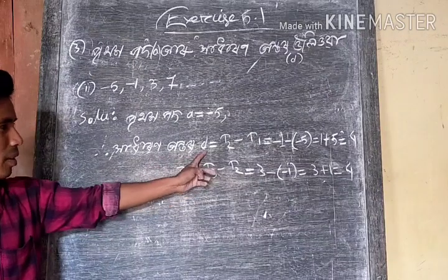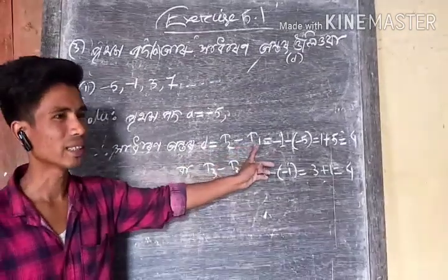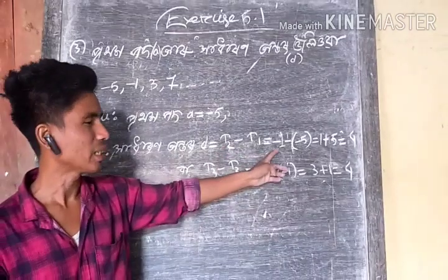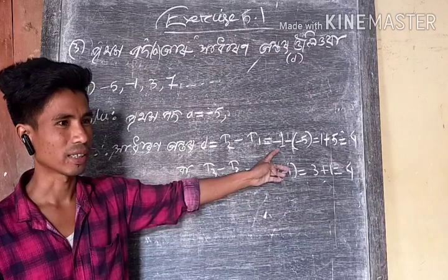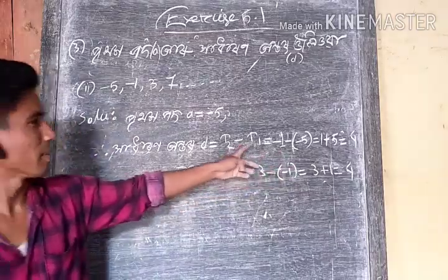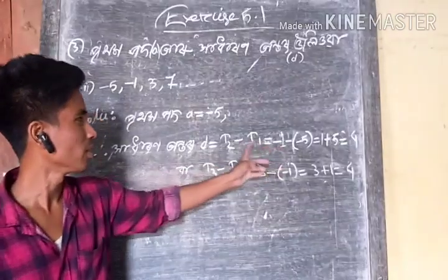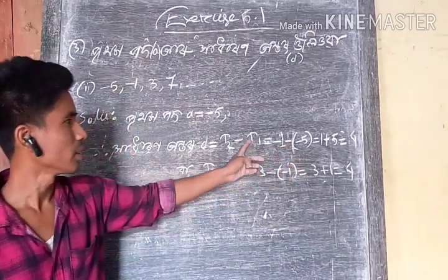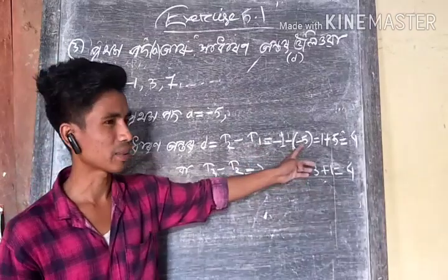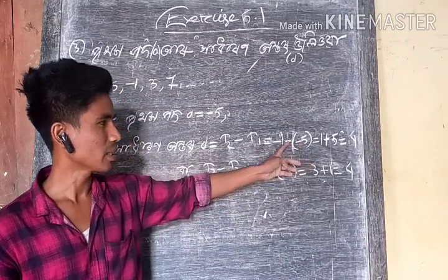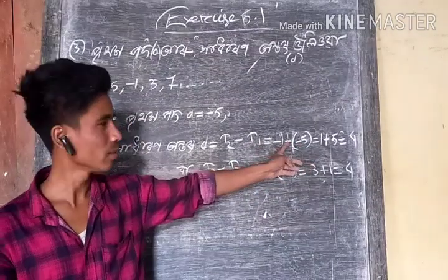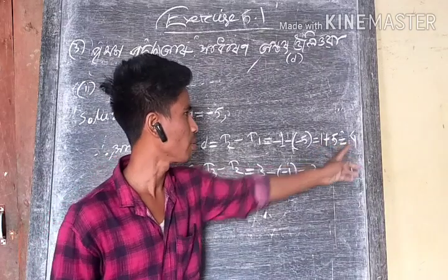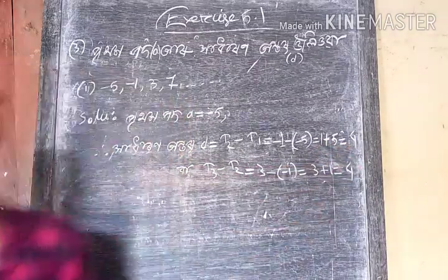D equals T2 minus T1. T2 means minus 1. Minus 1 is equal to minus 1. T1 means minus 5. Minus minus 1 equals minus 5. Plus 5 equals 4, so 1 is equal to minus 3.